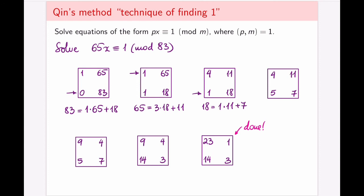What I actually am looking for is a solution to this equation. So we continue this until we get one. What's the solution? Well, the solution is its co-number. So 23 is actually my x. And we can check that 65 times 23 will in fact be 1 mod 83.